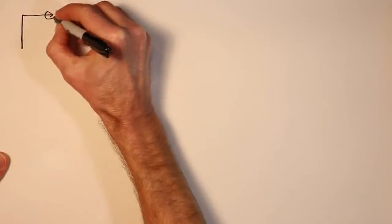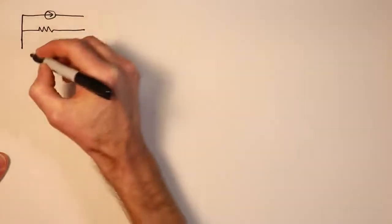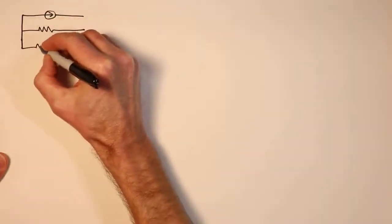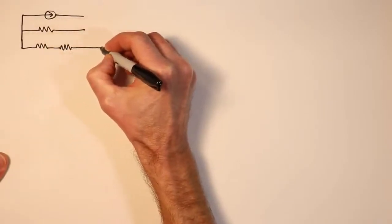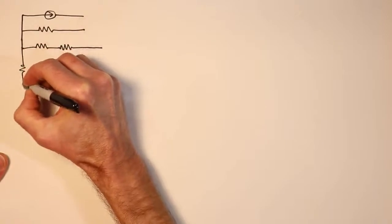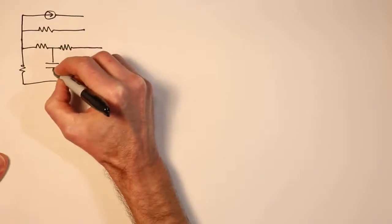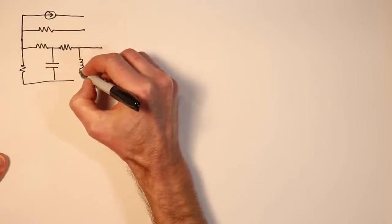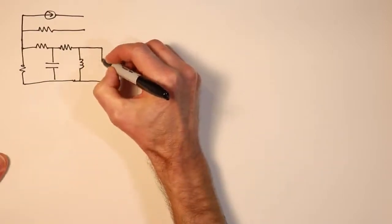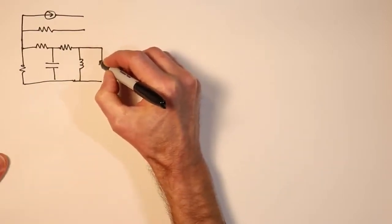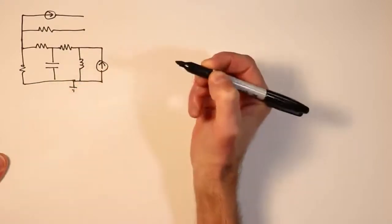We're going to have a little current source on top, a resistor associated with it, and down here we're going to have a few more components — some resistors, capacitors, inductors, the usual bit — and over here we're going to put in a current source. So this is certainly a little bit more complicated than many circuits we've had in the past.